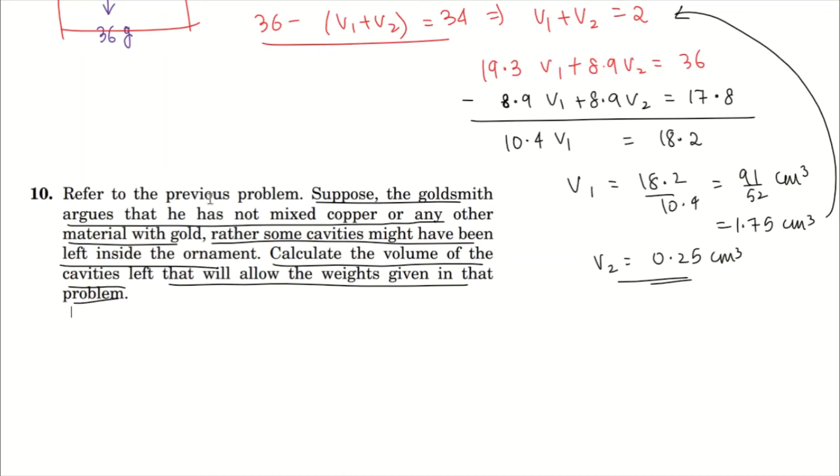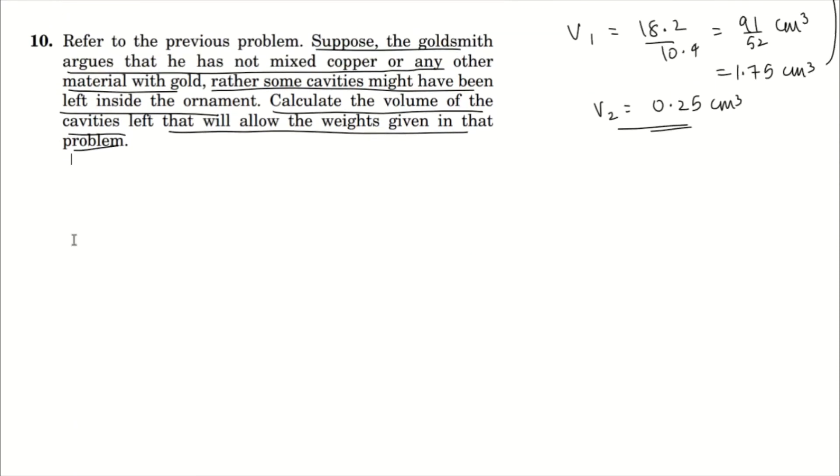The goldsmith says that there is no copper. Instead, there are some cavities inside the ornament due to which this happens. So let's calculate the volume of the cavities that would be left. For simplicity, let's imagine a hollow sphere. It doesn't matter what the cavity looks like anyway.